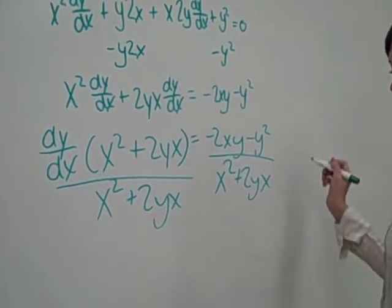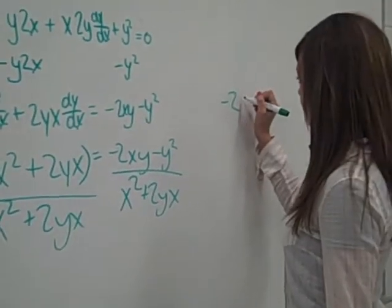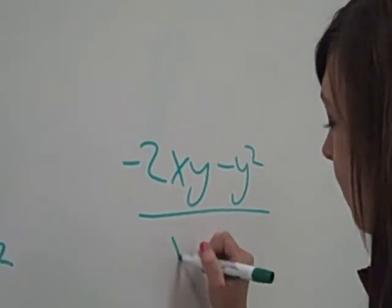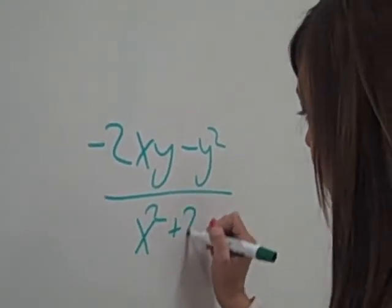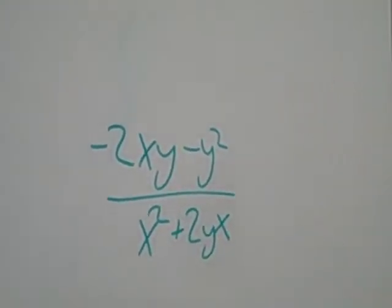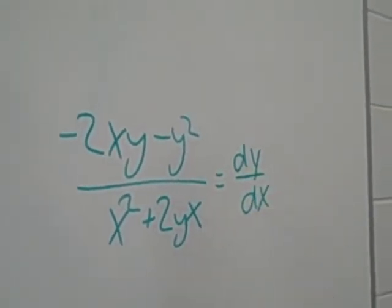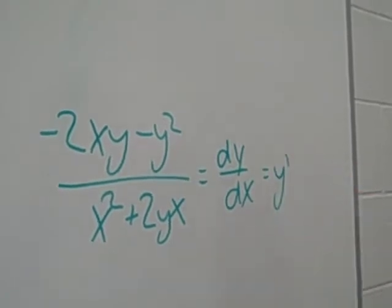And then we're left with our final answer, which is negative 2xy minus y squared over x squared plus 2yx equals dy dx, also known as y prime.